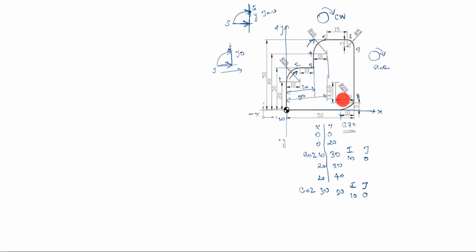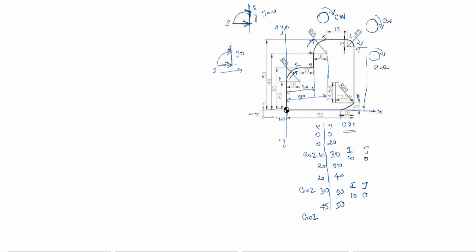Up to here is 30, X=45, Y=45, Y=50. Up to here we finished. After that it comes this way — the arrow comes down, so again clockwise, G02. G02: X-axis up to here is 50. Y-axis comes down, so you have to subtract 5, giving Y=45. X-axis is 50, Y-axis is 45.